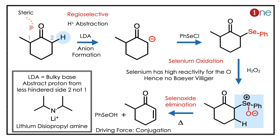The carbanion is a nucleophile, so it forms a silicon–carbon bond with phenylsilyl chloride. Then selenium oxidation occurs with hydrogen peroxide — selenium oxide forms, which is slightly unstable. The nearby proton is removed, completing the selenium oxidation step.